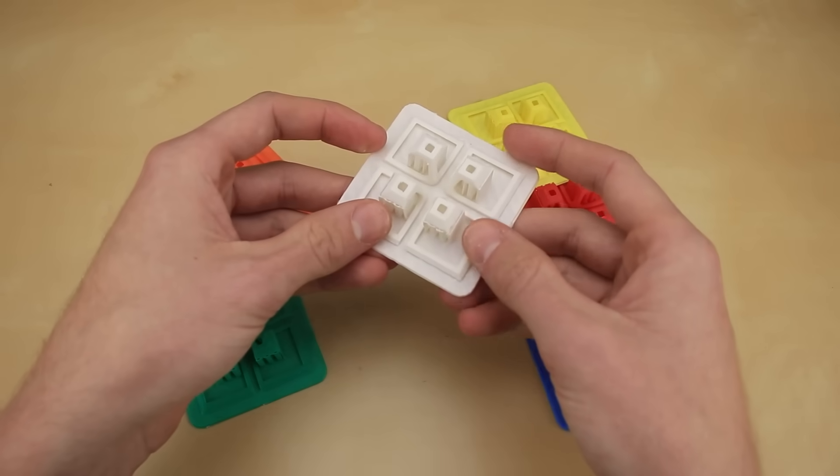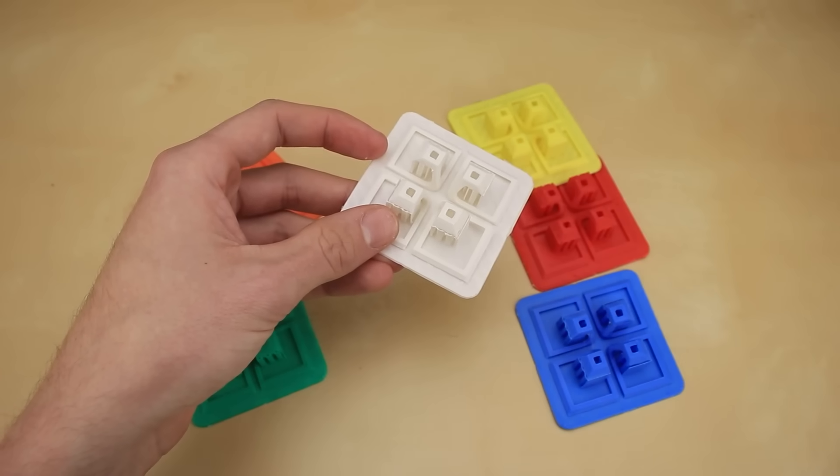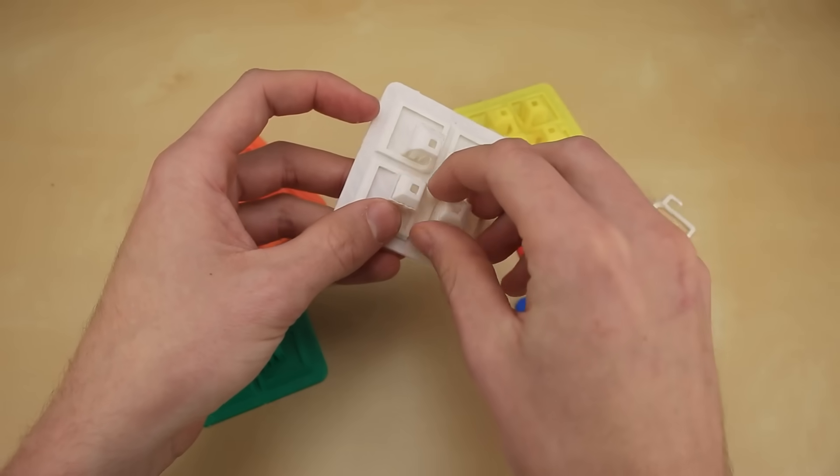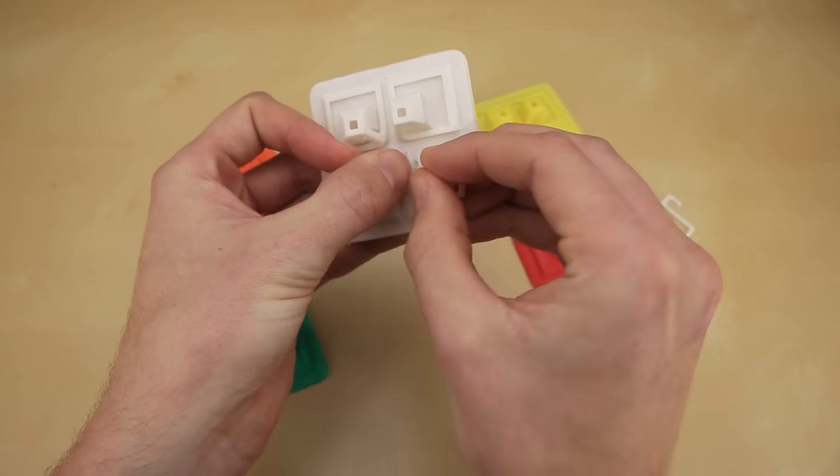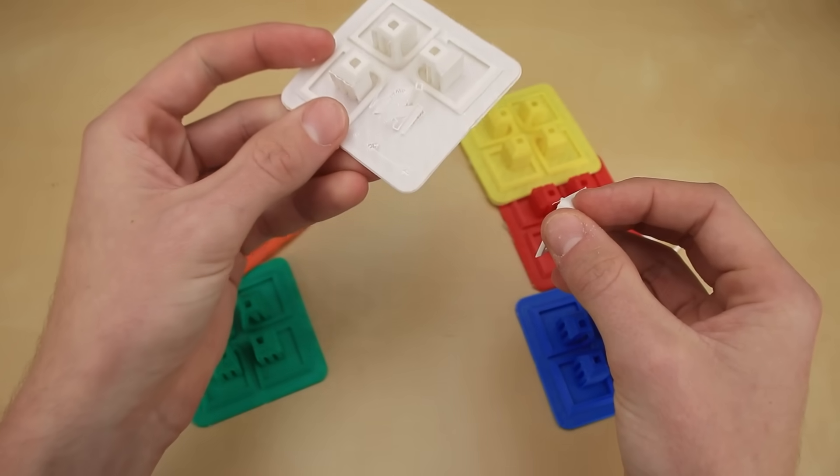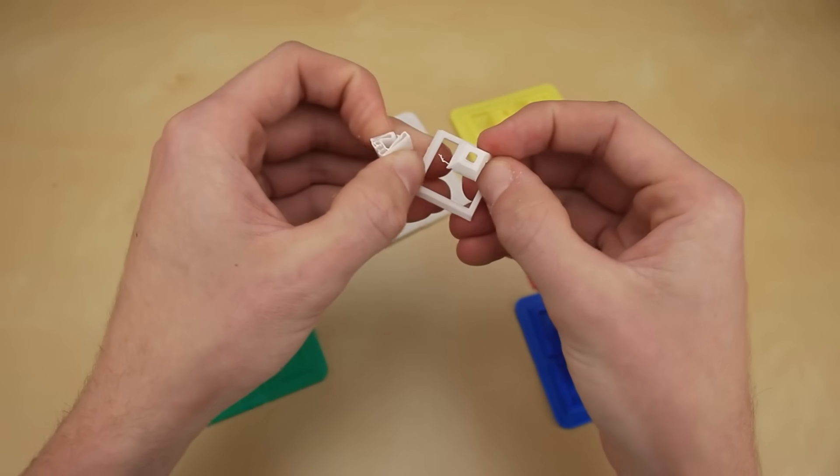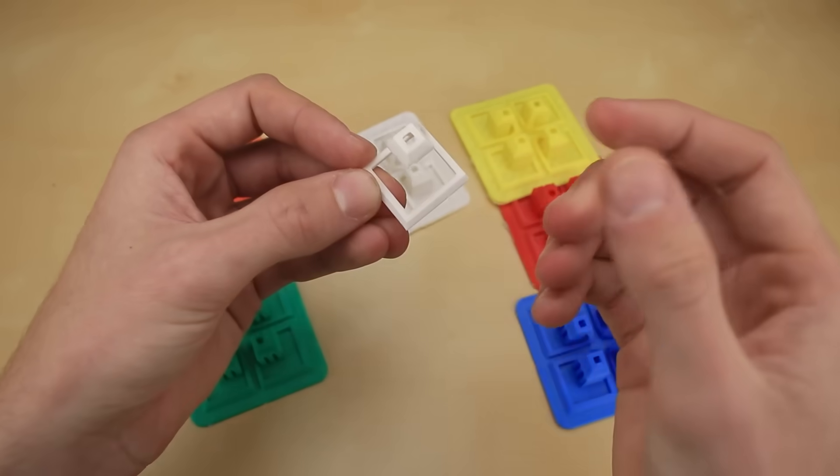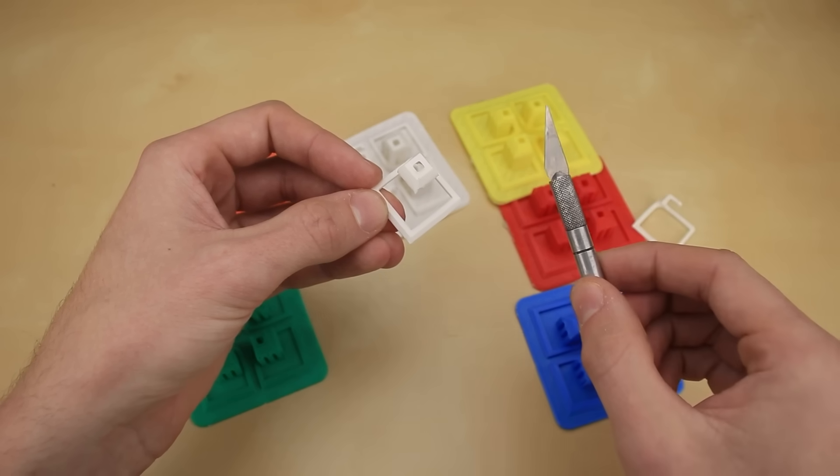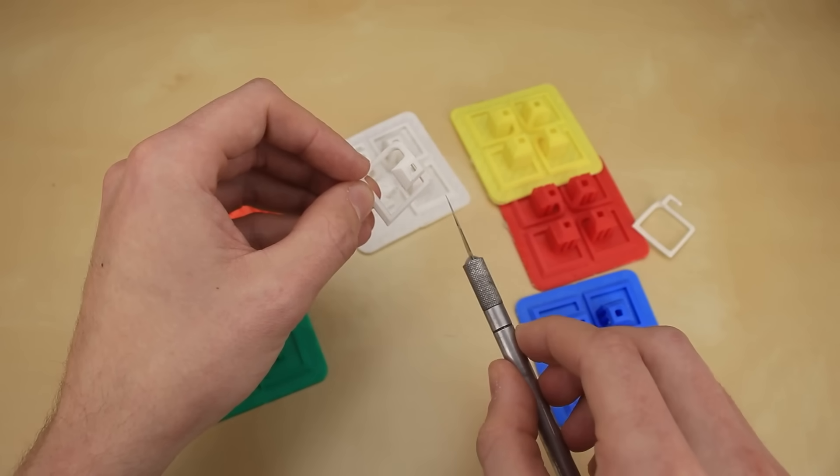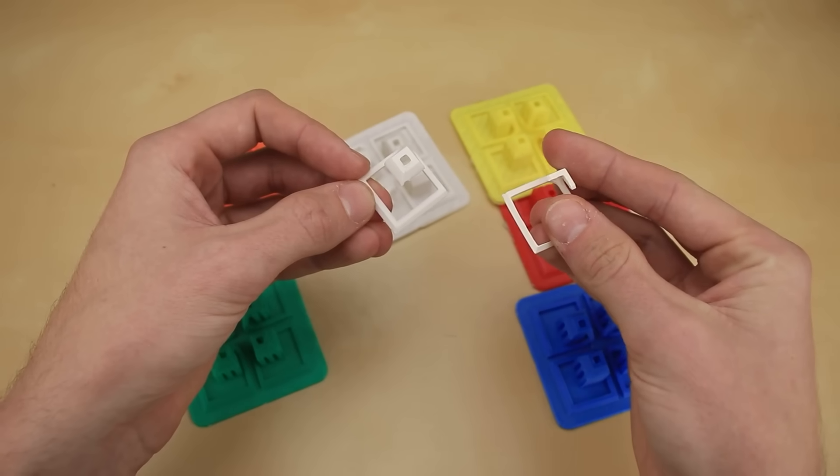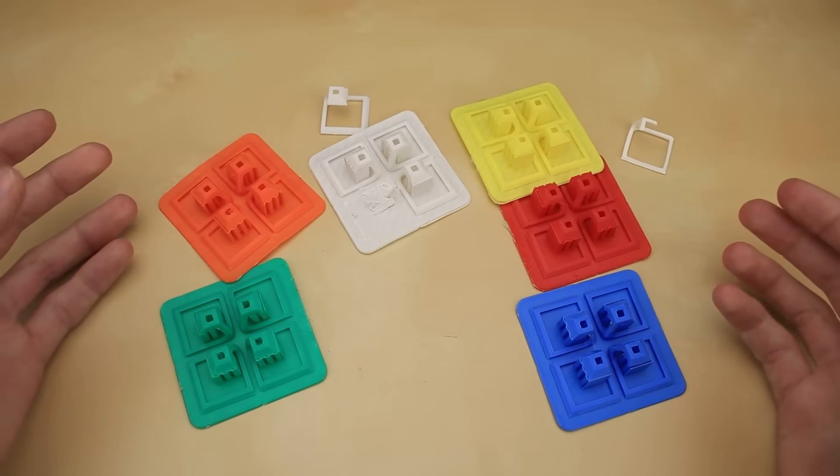So now what we have to do is take all 24 of these and turn them into these. Basically what that entails is peeling them all off of these rafts, which basically just help everything stick to the 3D printer bed a little bit better. And then removing all the supports, which basically just help things print properly when there's overhangs. And then we can do the painstaking part of taking a knife and cutting down all that excess plastic to get it to the very minimal design that we have right here. So let's go ahead and start the timelapse.